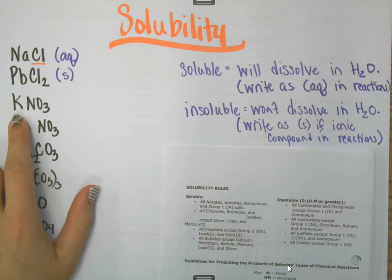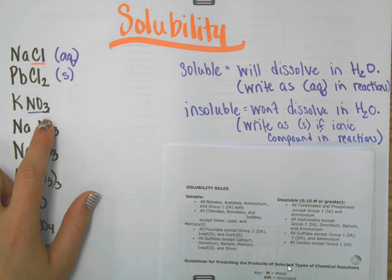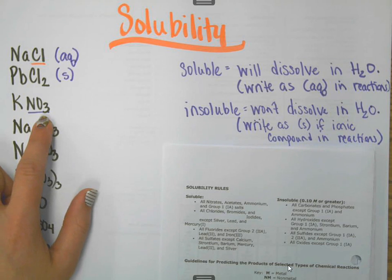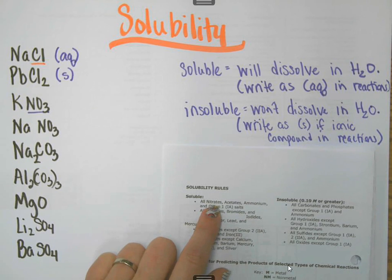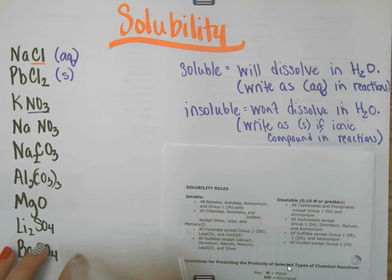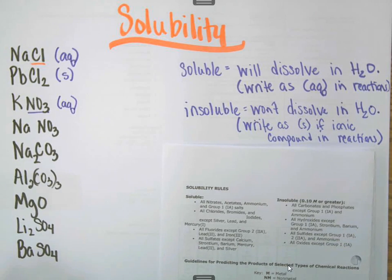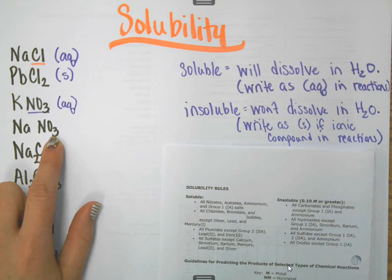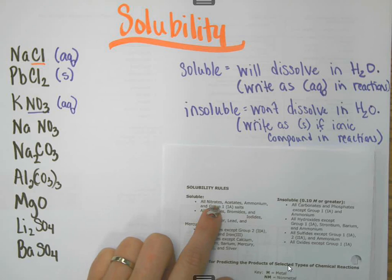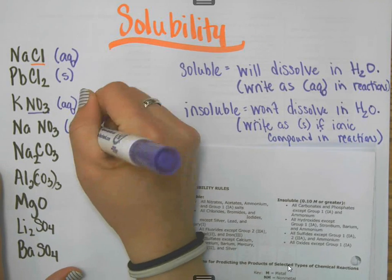The next one is potassium nitrate — it ends in nitrate. If you're not sure, remember that you have a polyatomic ion table to look up the ions. Nitrates are the very first thing listed, and it says all nitrates are soluble with absolutely no exceptions, so potassium nitrate is going to be aqueous. Sodium nitrate — same deal — all nitrates, so it's going to be aqueous as well.